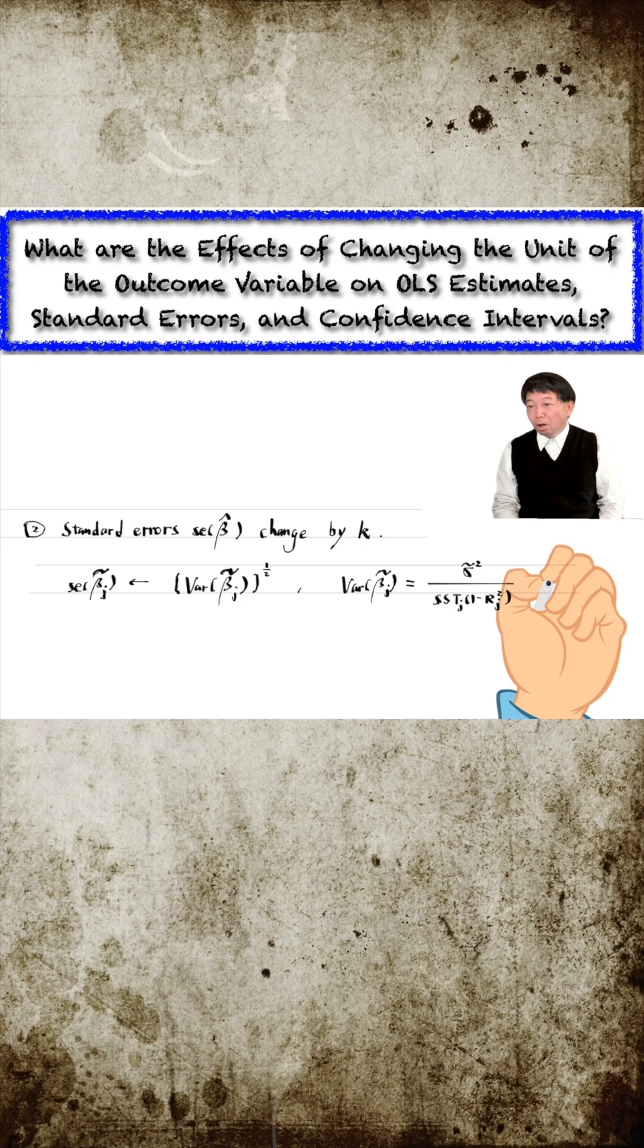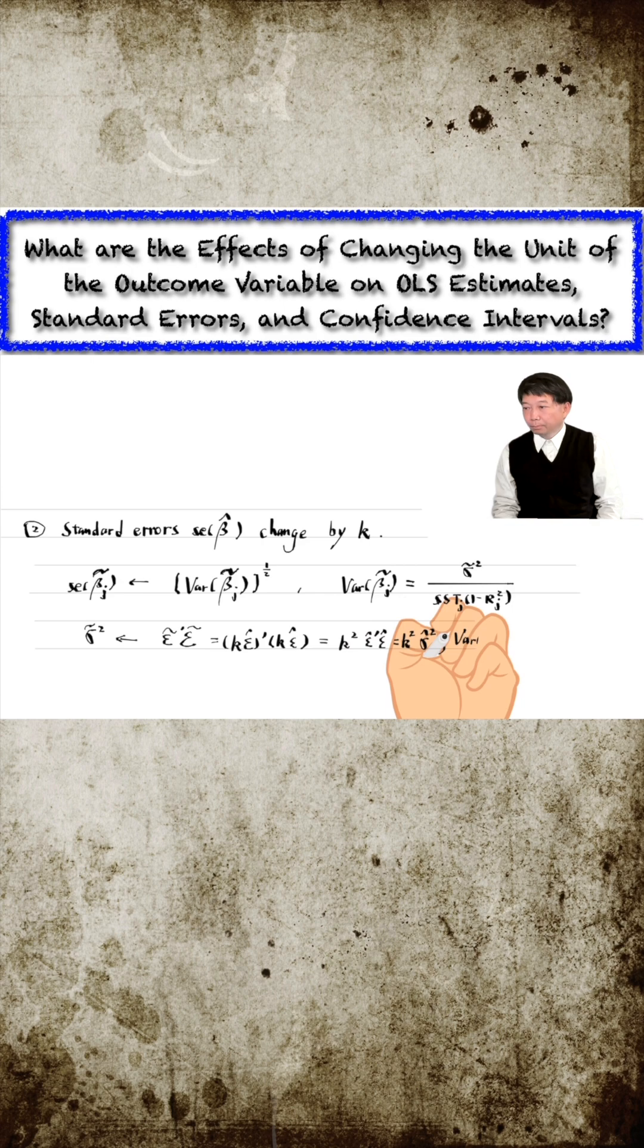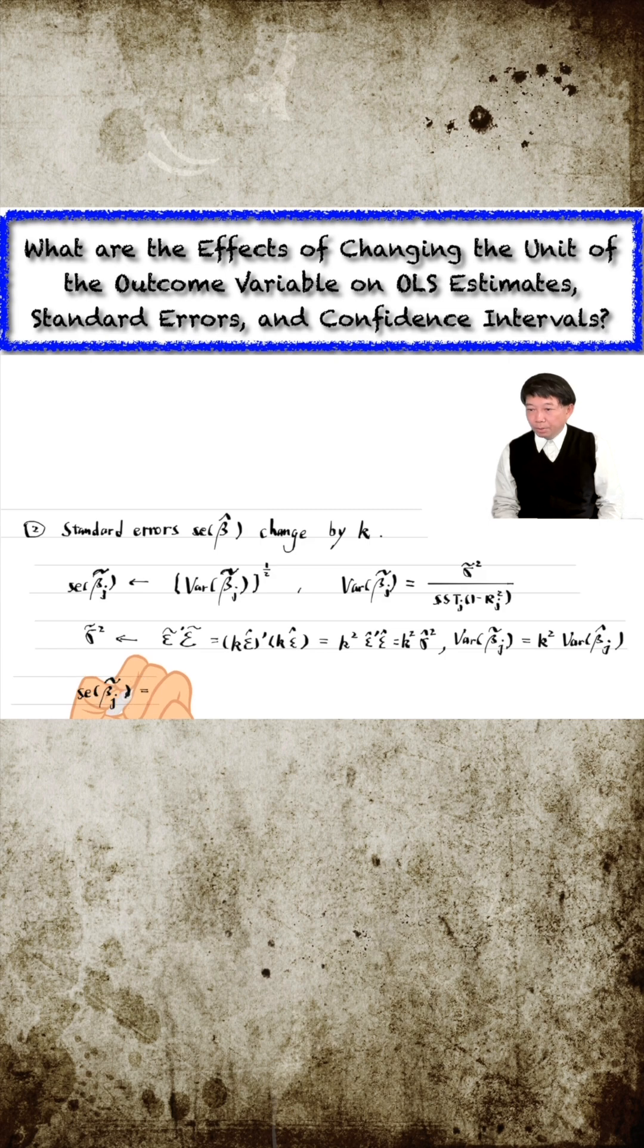The denominator concerns the explanatory variables that remain unchanged. Only the numerator sigma tilde squared changes. It is measured by the sum of square residuals, which is k squared times the old error variance. So the new estimate variance is k squared times the old estimate variance, and therefore the new standard error of the estimate is k times the old one.